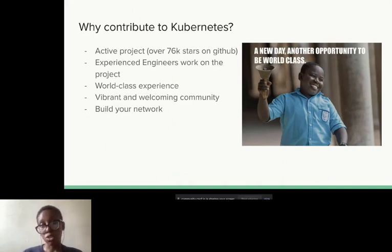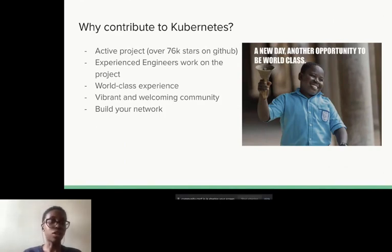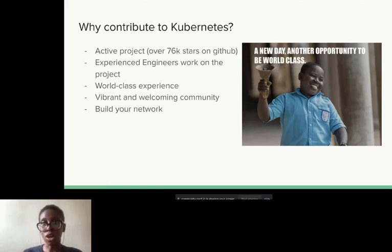When you start contributing to Kubernetes, one way or another, you have the opportunity to work with these people. They review your pull requests. And not just on a code basis — you get to collaborate with people across different time zones. You will learn how to communicate and collaborate with people who are not even around you. The community is also very active. The project has over 76K stars on GitHub. It's a very active project. In the main repository there are over a thousand pull requests open right now.